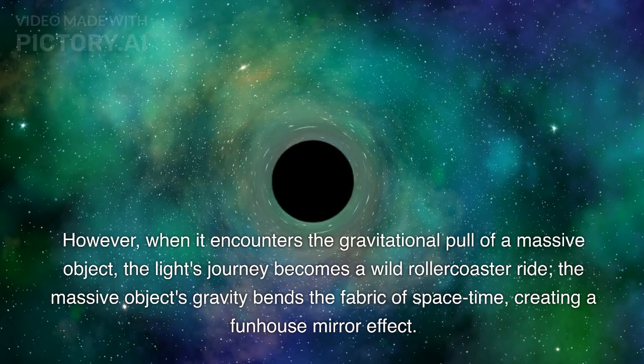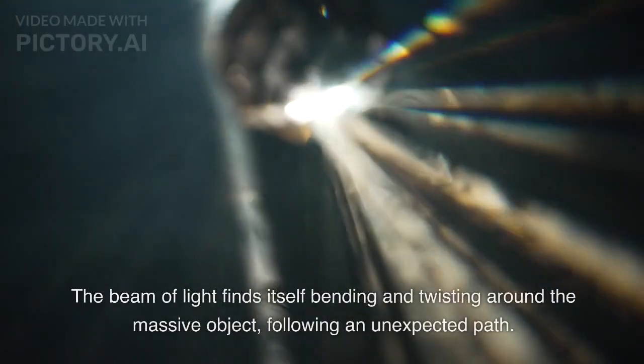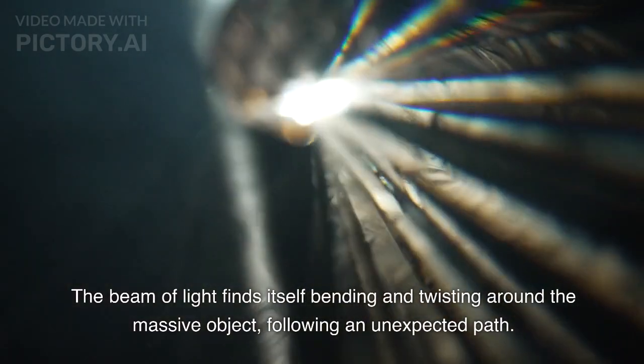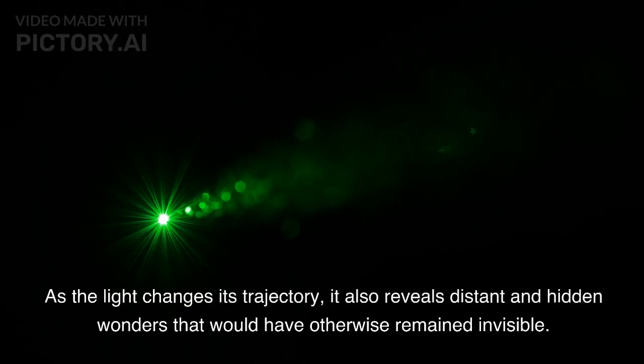The massive object's gravity bends the fabric of spacetime, creating a funhouse mirror effect. The beam of light finds itself bending and twisting around the massive object, following an unexpected path. As the light changes its trajectory, it also reveals distant and hidden wonders that would have otherwise remained invisible.